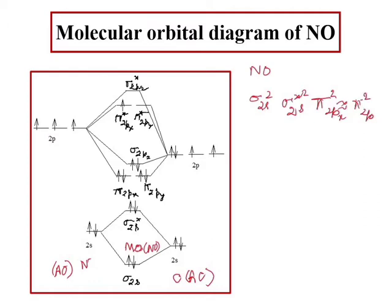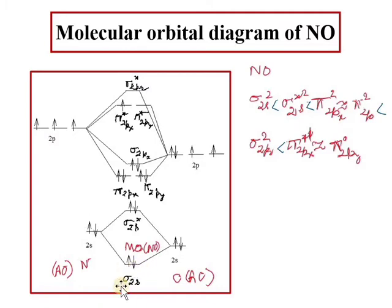Two electrons are in the sigma pz bonding orbital, and one electron is in the pi anti-bonding molecular orbital of NO. One anti-bonding orbital remains empty. If we look at the energy order, the electronic configuration of NO is: sigma 2s2 bonding, sigma 2s2 anti-bonding, then pi bonding orbitals, then sigma 2pz bonding, then pi anti-bonding orbitals. You will see that there is an odd electron in the case of NO.